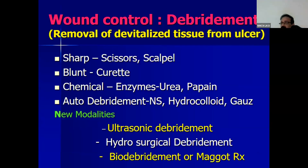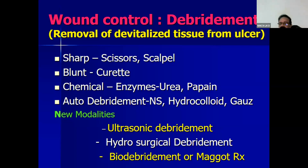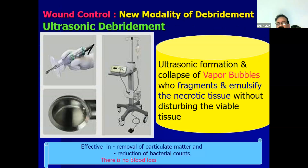After cleaning the wound, you have to debride it. Debridement means removal of dead necrotic tissue. There are different types: sharp debridement is done with scissors and scalpel in the OT; blunt debridement is done with a curette, which is a very important small instrument that podiatrists should have; chemical debridement using urea-papain etc.; and auto-debridement through the body's own defense mechanism using hydrocolloid or plain gauze. There are also newer modalities — ultrasonic, hydrosurgical, and bio-debridement.